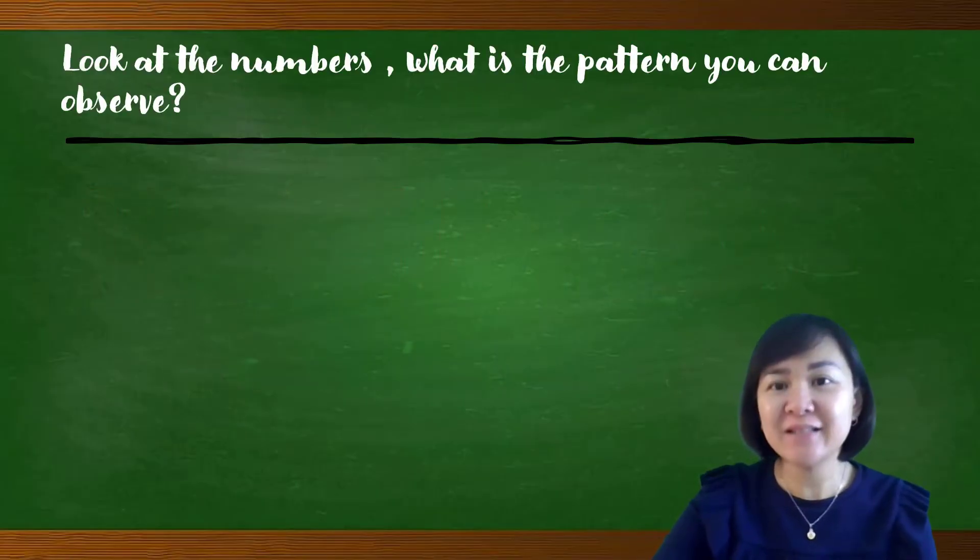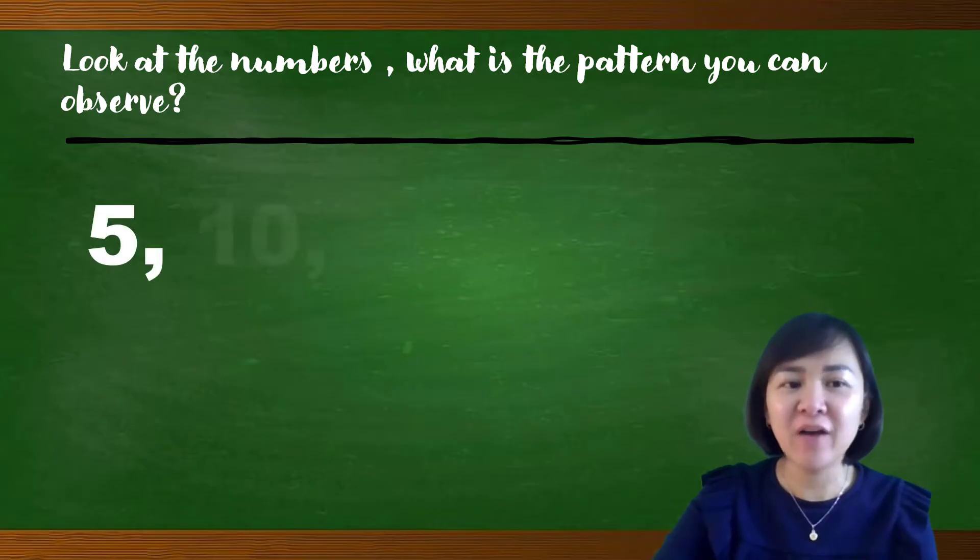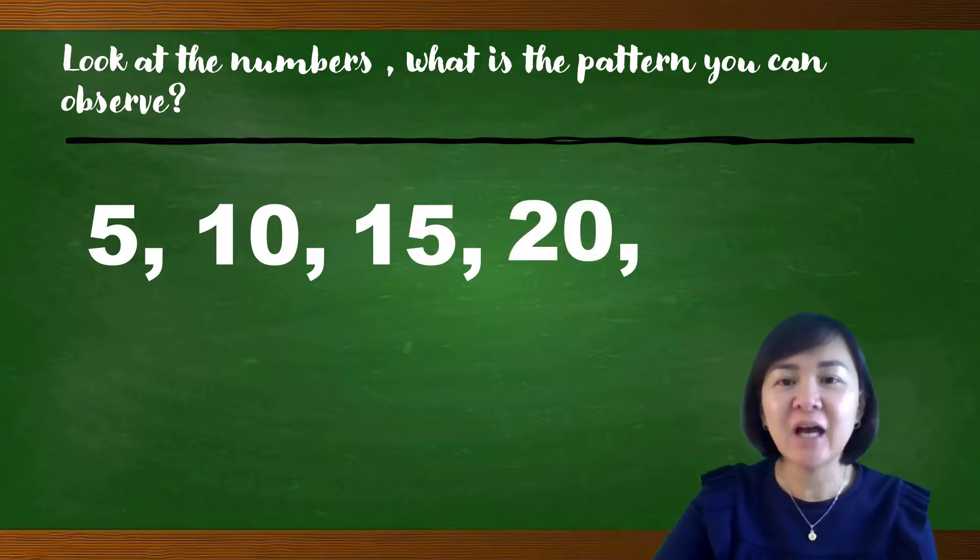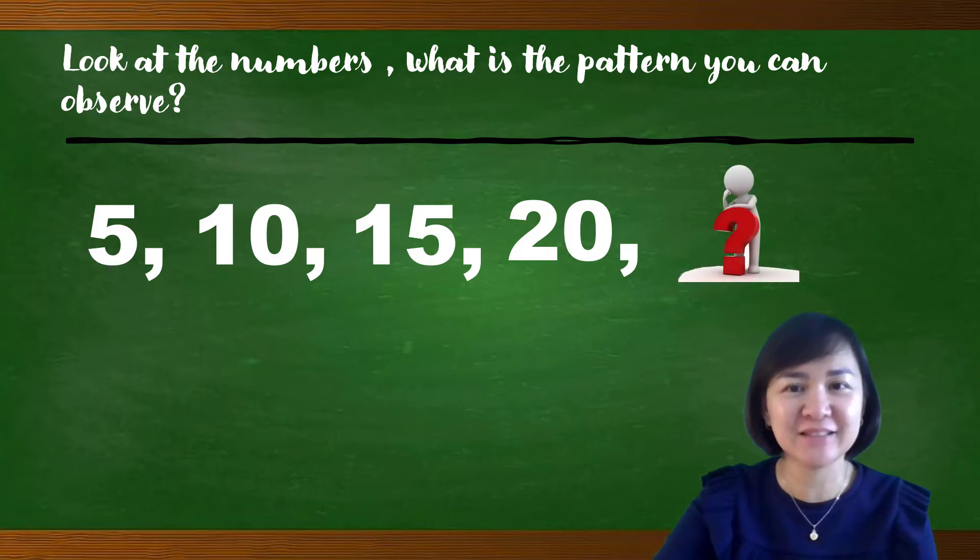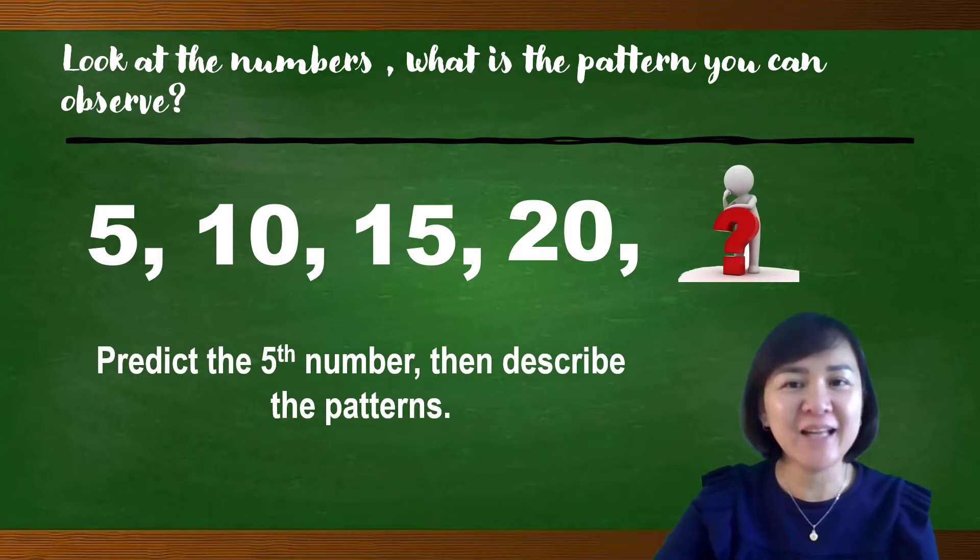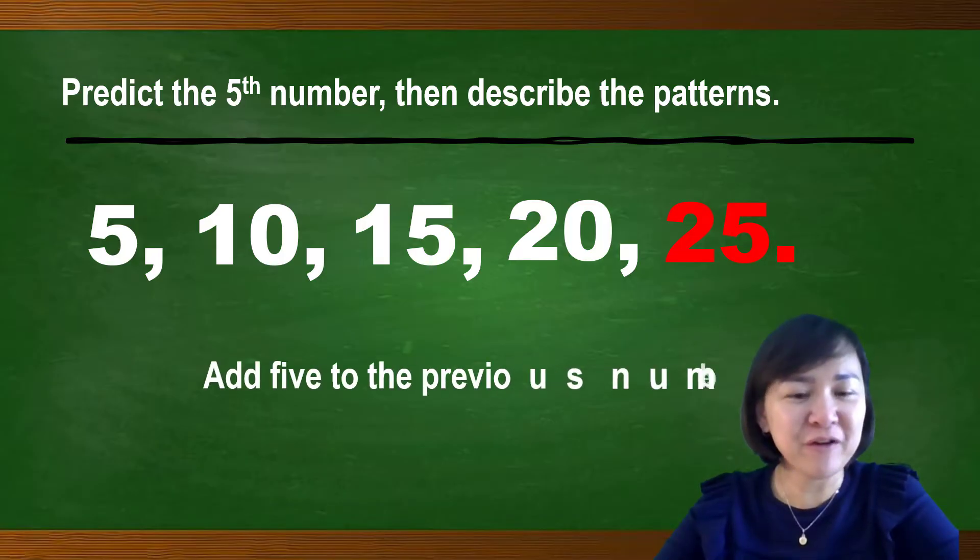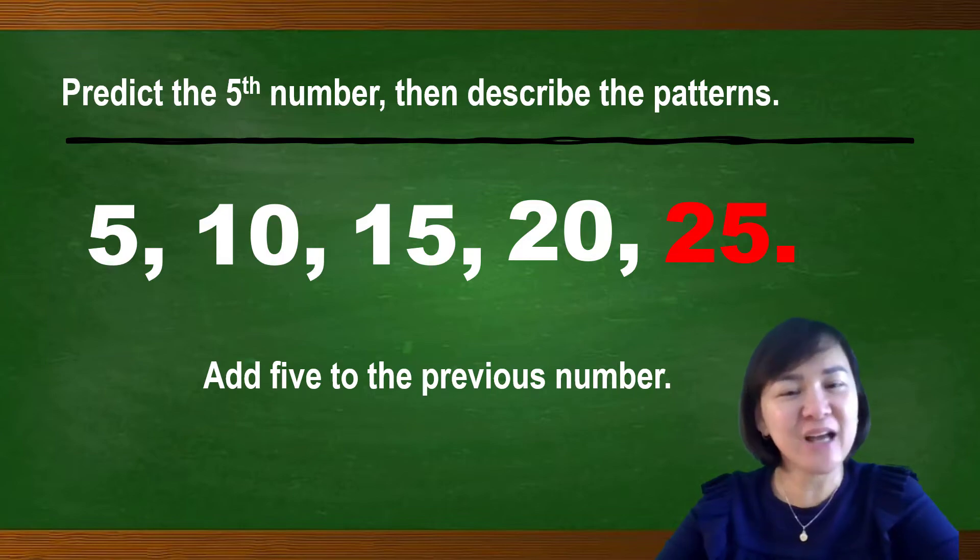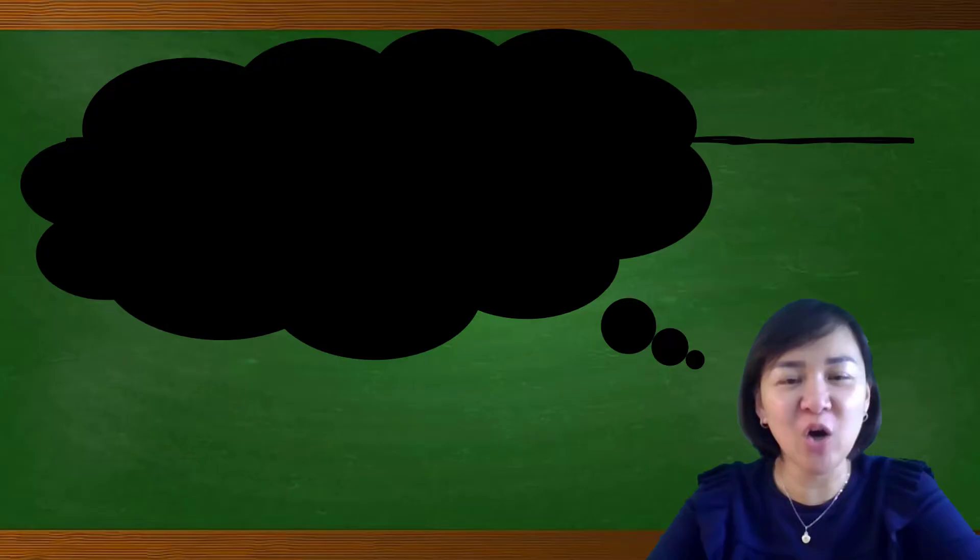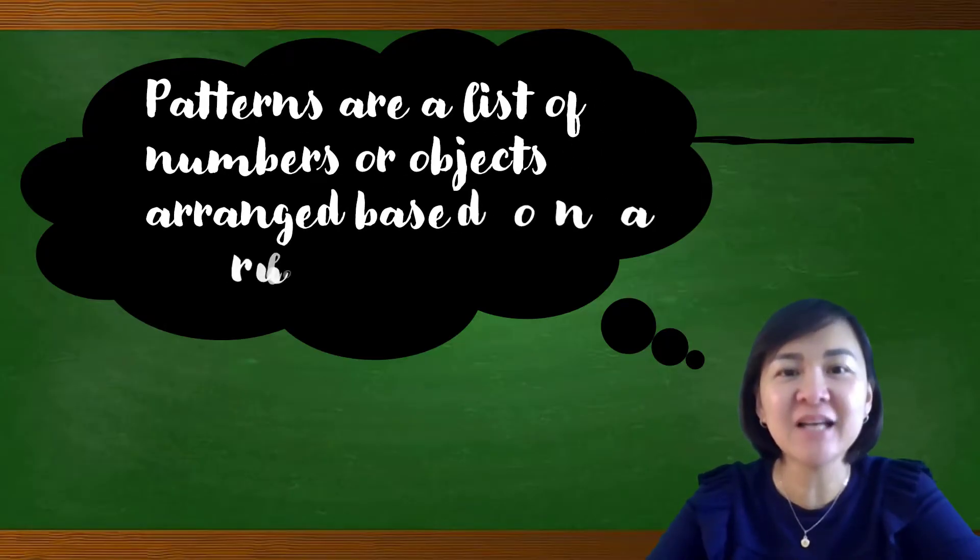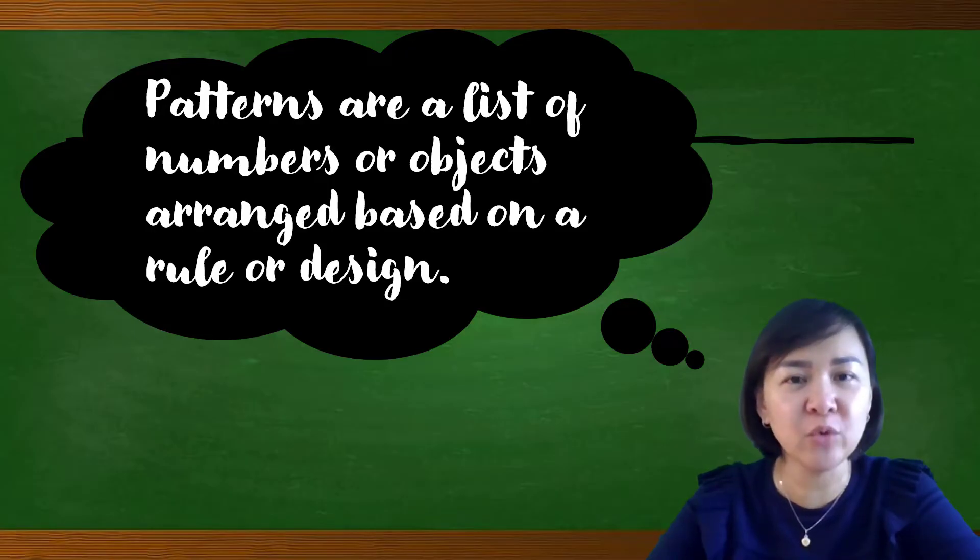Let's look at another example. Look at the numbers. What is the patterns you can observe? 5, 10, 15, 20. So, what is the number come next? Predict the fifth number, then describe the patterns. So, what is the number come next? Do you know the answer? Can you see the patterns? Yes, the number come after 20 is 25. Can you describe the patterns? Yes, add 5 to the previous number. Very good. Well done. Therefore, we can make a conclusion that patterns are a list of numbers or objects arranged based on a rule or design.